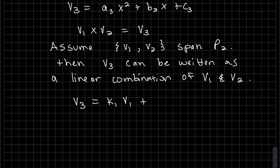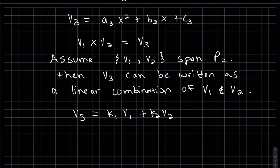Spanning means any vector v3 can be written as a linear combination of those two. Again, I'm assuming they do span. So let's write that out: v3 is k1 v1 plus k2 v2. We can assume that v1, v2, and v3 are non-zero.